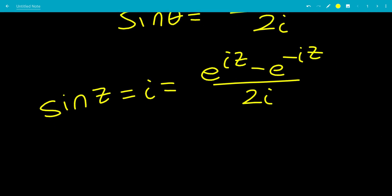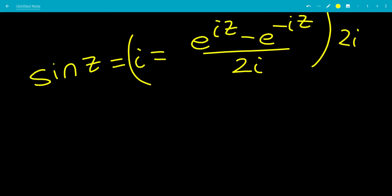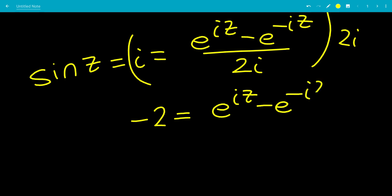We'll multiply by 2i on both sides, so we get 2 times i squared. Since i squared is defined to be negative 1, we get negative 2 equals e to the iz minus e to the minus iz.